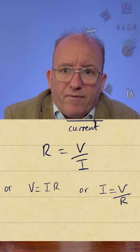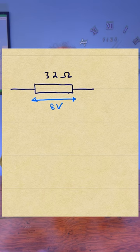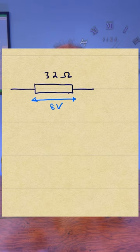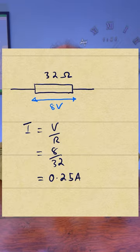Let's look at some examples. We have a 32 ohm resistor with a potential difference of 8 volts across it. What is the current flowing through it? Well, I is V over R, so 8 volts divided by 32 ohms equals 0.25 amps.